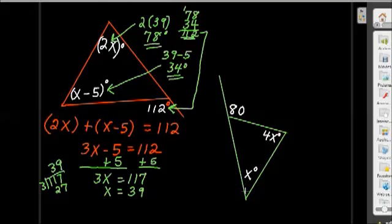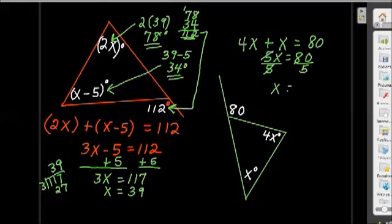Alright. We've got another triangle down here in green. Kind of a similar situation. I have the exterior angle and the two interior angles. So, I'm going to write the equation as 4x plus x equals 80. So, these are my two interior angles that equal the one on the outside. 5x equals 80. And if I divide both sides by 5, I'm going to get x equals 16.